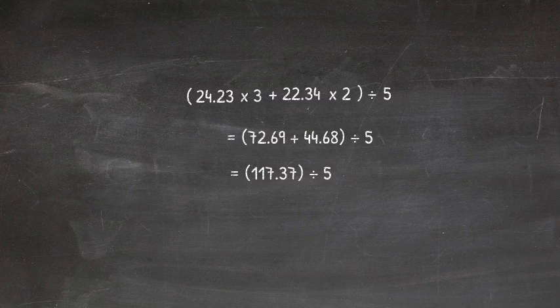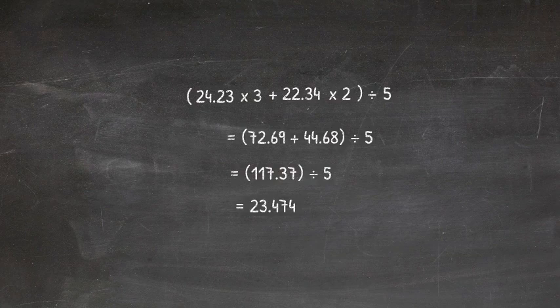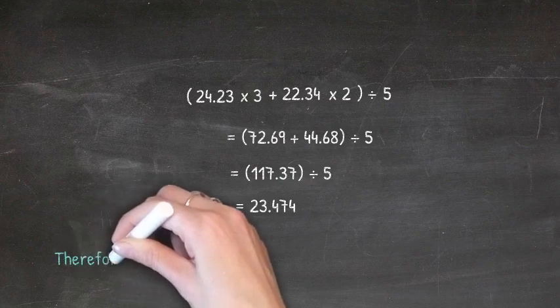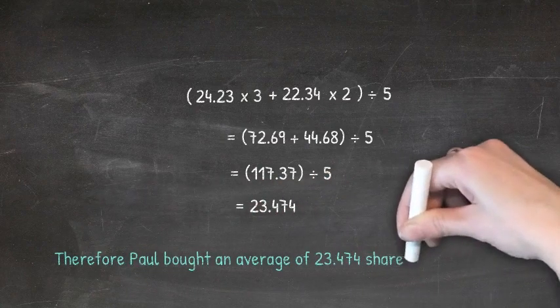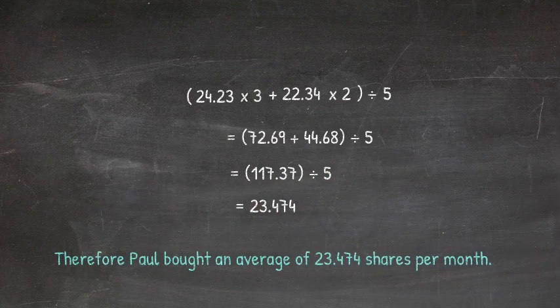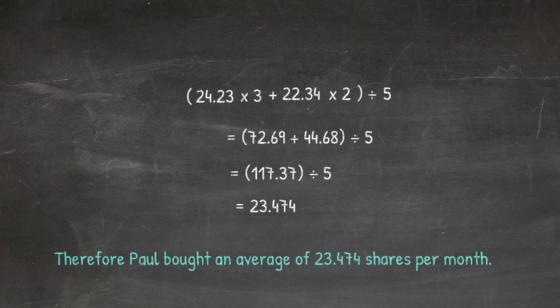Then, we can divide that total by five to figure out his average per month. 117.37 divided by five is 23.474. This means that Paul bought an average of 23.474 shares per month.